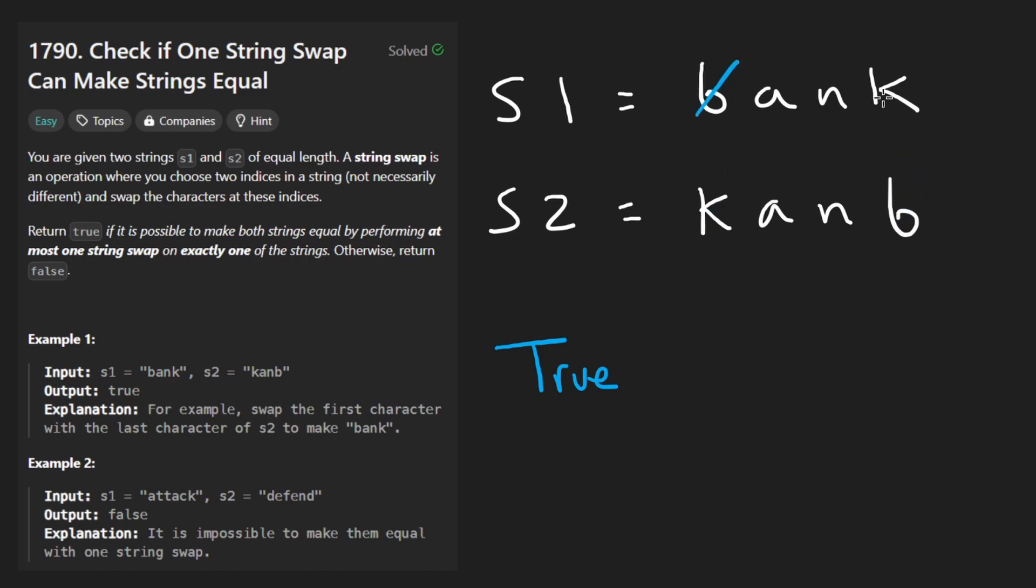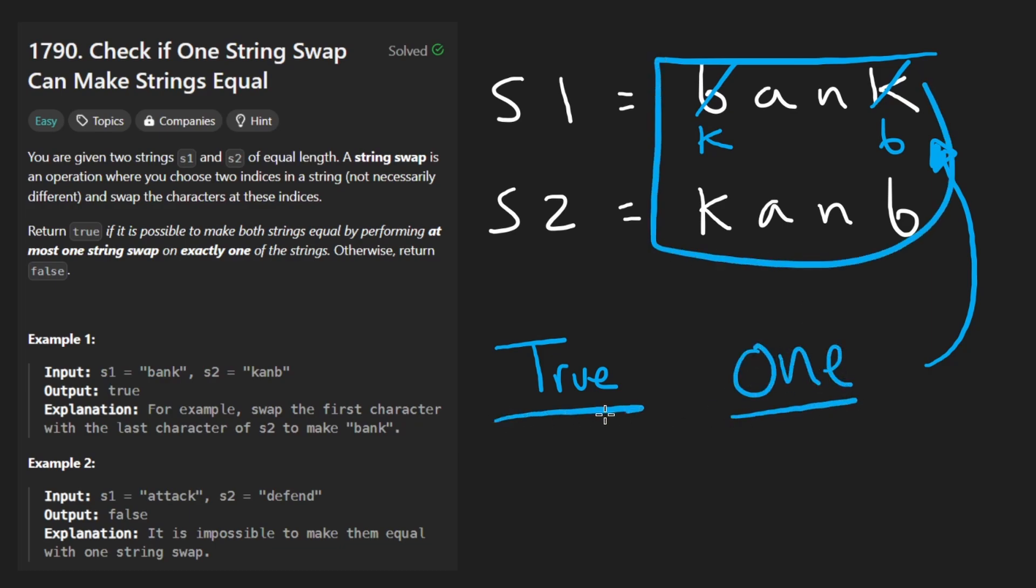I could have just performed the swap this way. I could have put k over here and then b over here if that indeed did make the strings equal. So since it is possible to make these two equal with exactly one swap we return true.